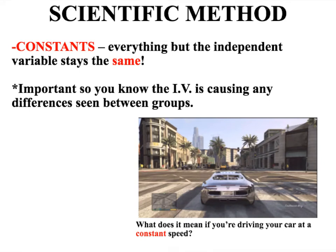Besides the independent and dependent variable, every experiment is going to have constants. Constants means that everything has to stay the same between the groups except the independent variable. The memory trick is to think about driving your car at a constant speed — constant means staying the same. Constants are really important because they let us know that only the one thing that changed, the independent variable, is causing any differences we see in our experiment.